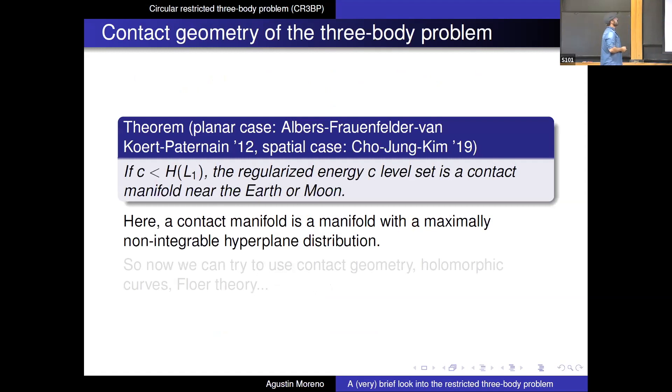So there's a very nice theorem, which in some sense is the starting point for all the contact and select geometry that we can do in this very old problem, which is due to a number of people in the planar case proved in 2012. It was also generalized in the spatial case more recently in 2019, which roughly speaking says, if your energy is low, then the regularized energy level sets are actually contact manifolds, both near the Earth and the Moon. So let me remind you here, a contact manifold is just a manifold with a maximally non-anxial hyperplane distribution. So this was already considered in previous talks by Bahar and Nesedlik.